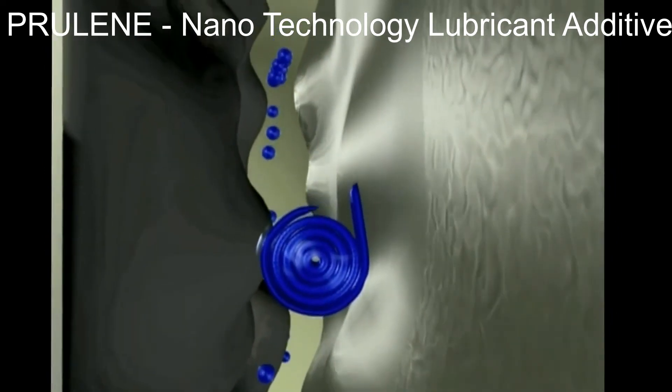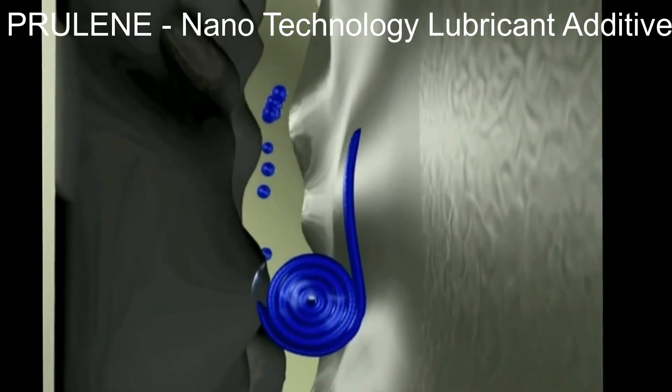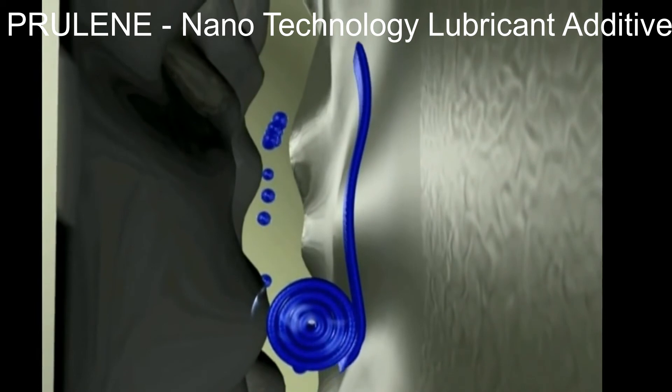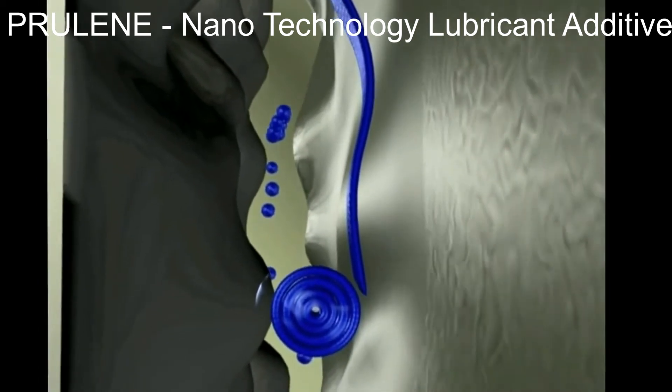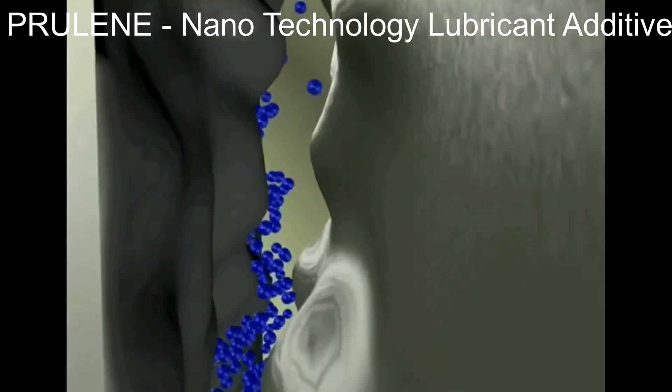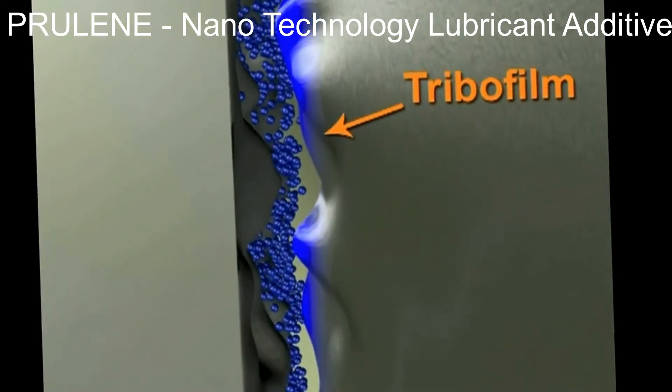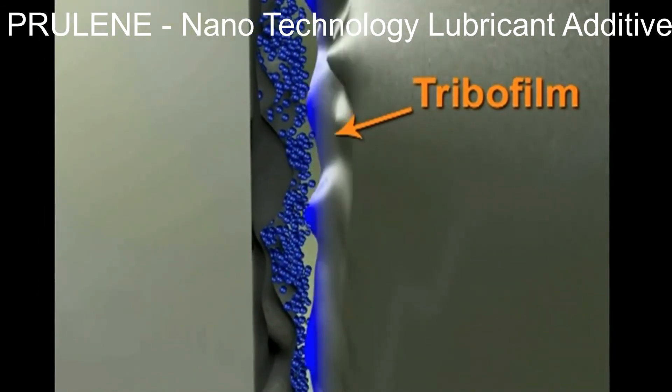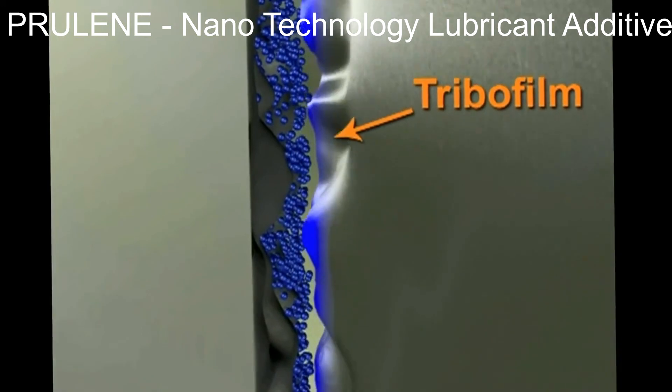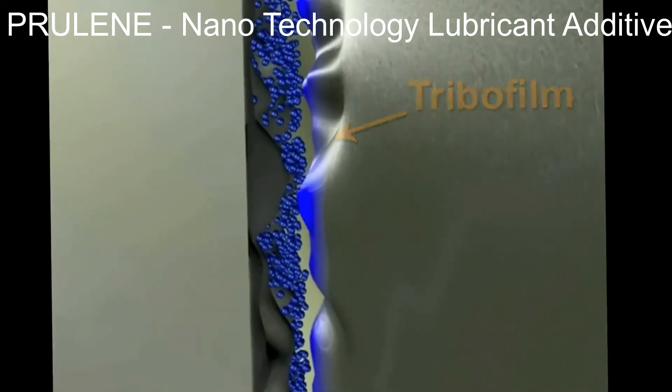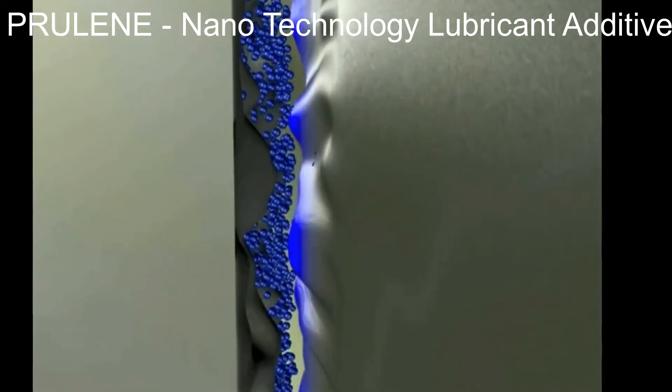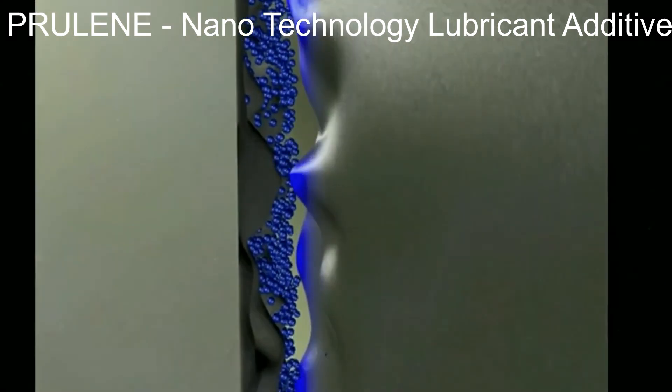The nanoparticles have the ability to exfoliate, whereby the external layers peel off the nano-onions when subjected to high pressures, forming a protective film on the moving metal surfaces. This film, known as a tribofilm, prevents wear and gives the metal durable protection and the ability to withstand high pressures.